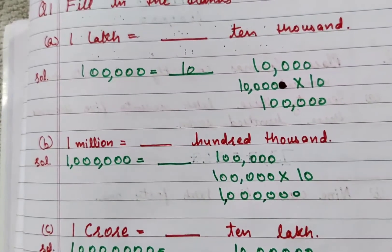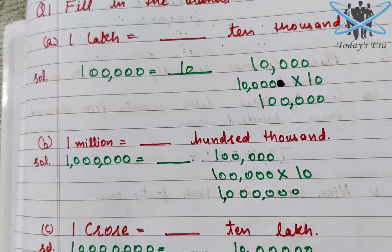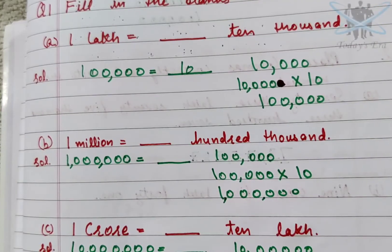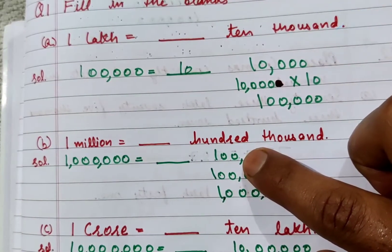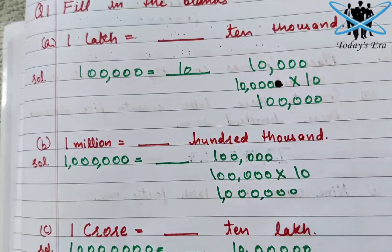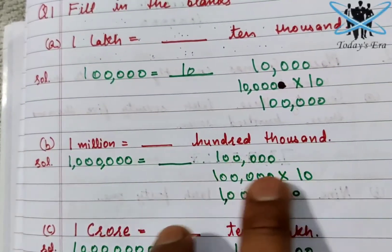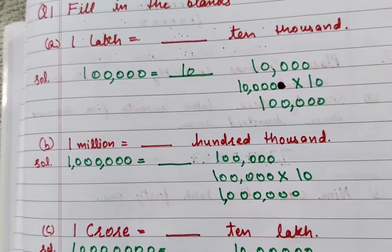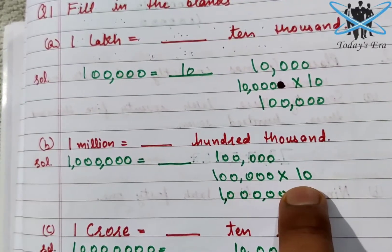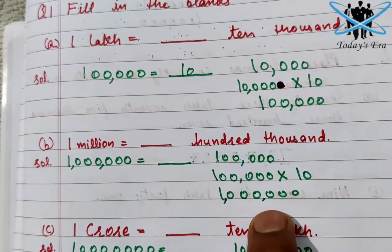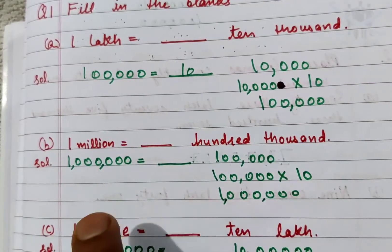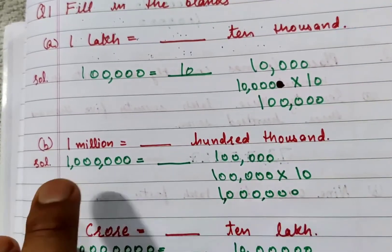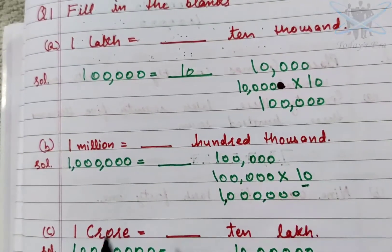In the same way, for the next part: one million equals to dash hundred thousand. One million has six zeros. Now for hundred thousand — hundred always brings two zeros, and thousand brings three zeros, so hundred thousand has five zeros. We need to make both sides equal. To go from five zeros to six zeros, we multiply hundred thousand by ten. So your answer is 10.